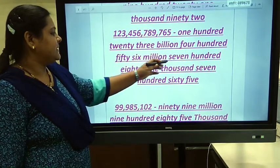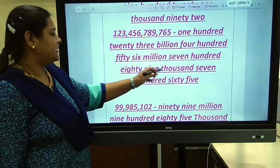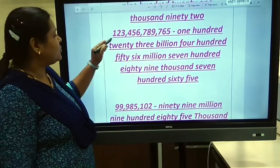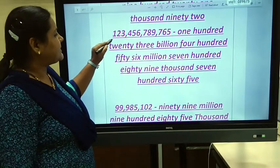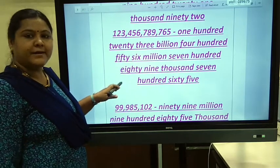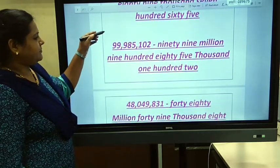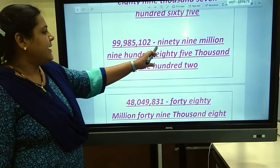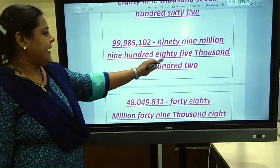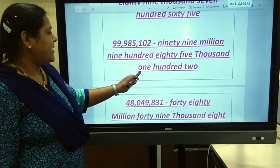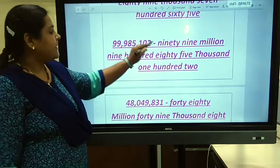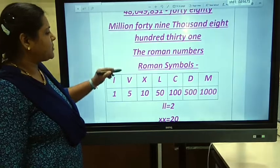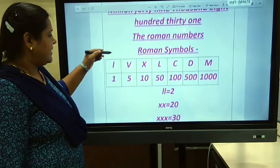For 123,456,789,765 there is no zero at all, so you don't need to worry — just use the place values and commas to quickly convert to numeration. For 99,985,102 there is one zero, so be careful here. I'll show you two ways: if there was a 2 instead of 0 it would be 122. This is how we convert all numbers to numeration.